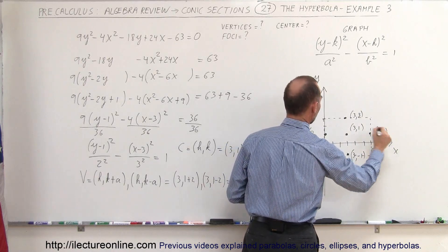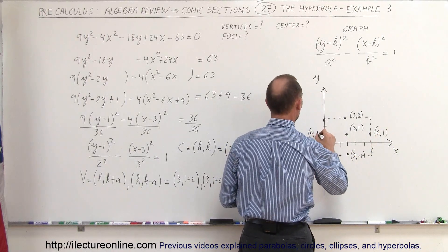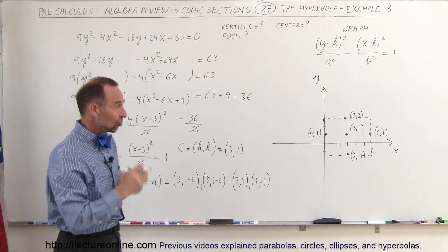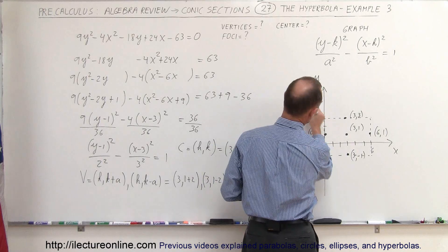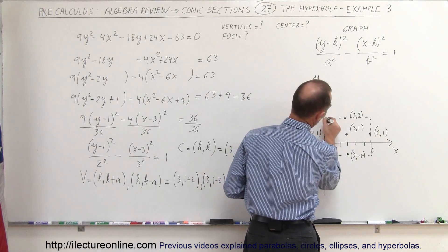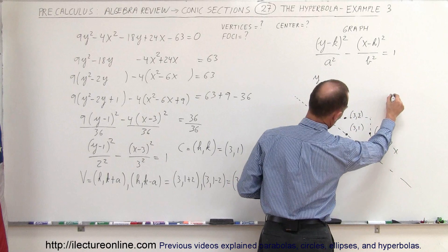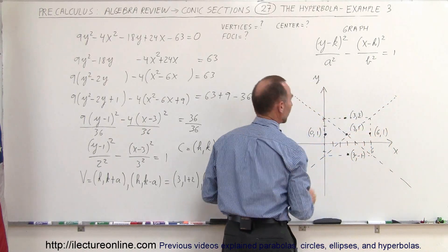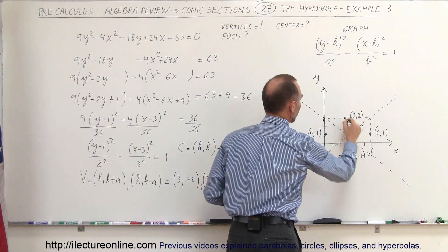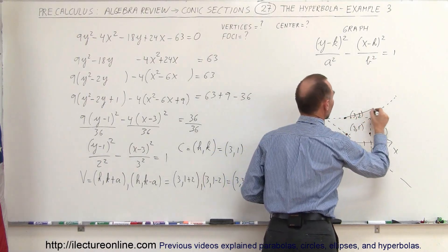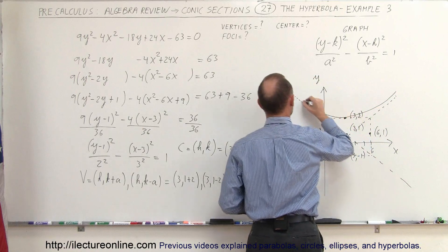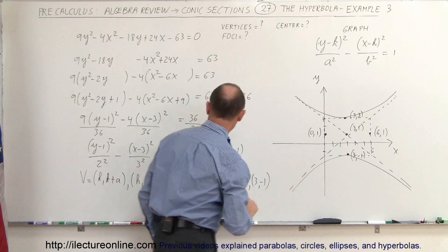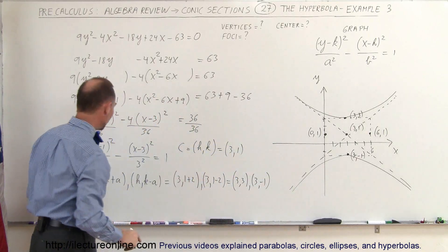To find the exact shape of the hyperbola we draw the asymptotes going through the corners of the box and through the center. Since the hyperbola opens up and down, using those two vertices, we can go ahead and graph the hyperbola opening upward and downward. So we've found the center and the vertices — now we need to find the foci.